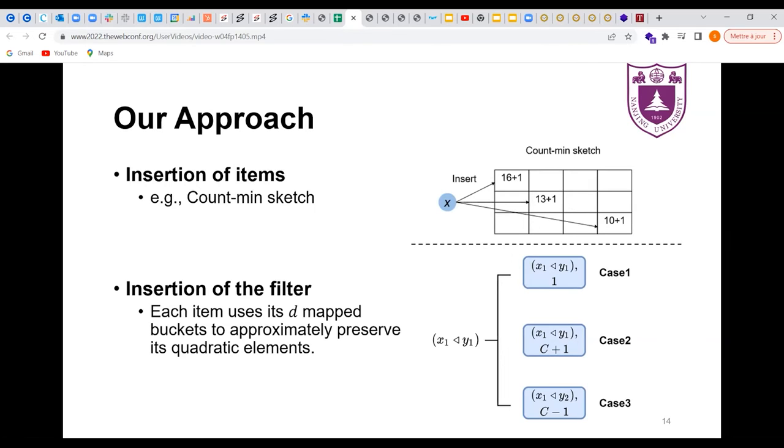Case 1, the count of the bucket is 0. We insert X, Y into it. Case 2, X, Y is recorded in the bucket. We increase its counter by 1. Case 3, X, Y is not recorded in the bucket. We decrease the counter by 1. After that, if the counter value is 0, we replace the element with X, Y and set the counter as 1.